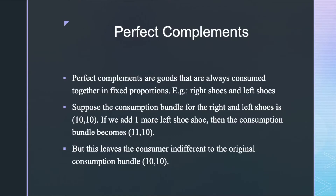Now let's move on to perfect complements. Perfect complements are goods that are always consumed together in fixed proportions. An example will be right shoes and left shoes — a consumer always wears right and left shoes together. Suppose the consumption bundle for right and left shoes is 10-10. If we add one more left shoe, the consumption bundle becomes 11-10. But this leaves the consumer indifferent to the original bundle 10-10, because the extra right shoe doesn't do him any good. The same thing happens if we add one more right shoe, meaning the consumer is indifferent between 10-11 and 10-10.